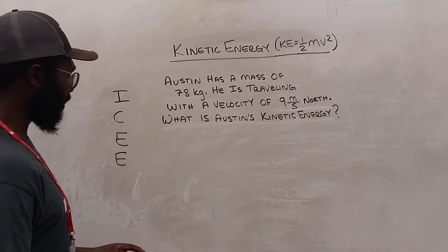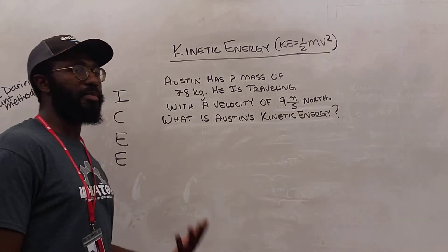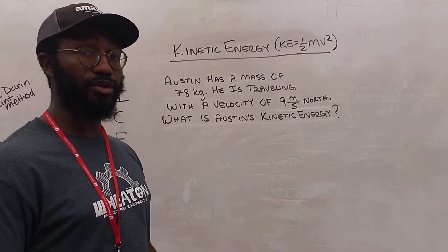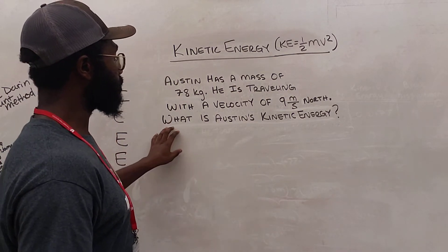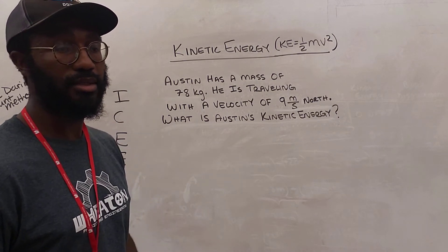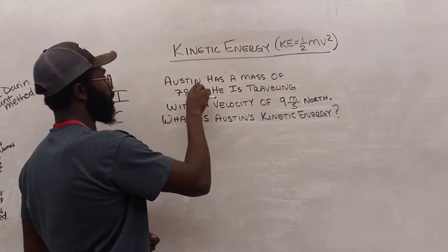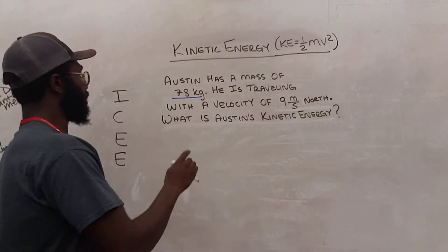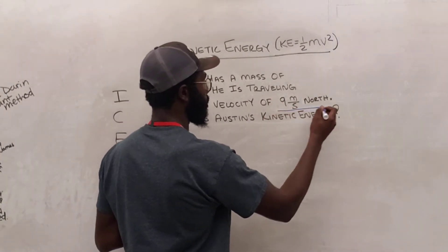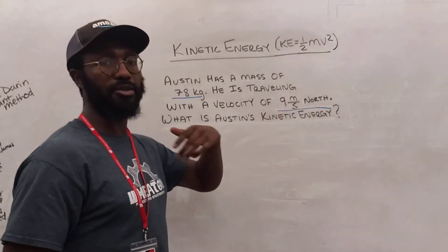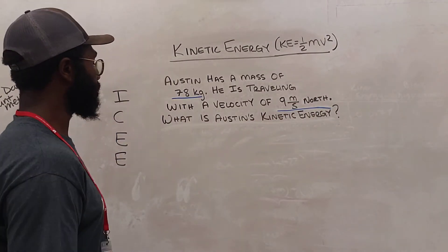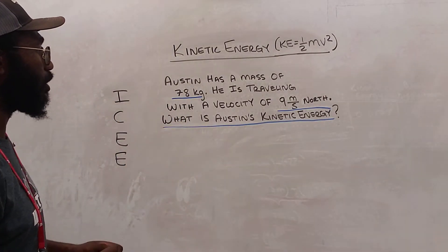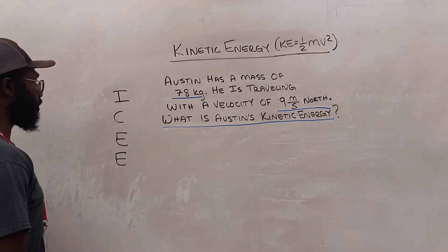Our first step is to identify any measurements in the problem. A measurement is a number, the unit for that number, and if given, the direction in which it's moving. We also want to identify the question being asked. So, Austin has a mass of 78 kilograms — I'll underline that. Velocity of 9 meters per second north — I made sure to underline north as well because we want to capture the direction. And the overall question: what is Austin's kinetic energy?